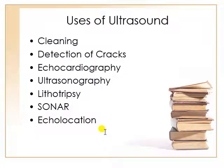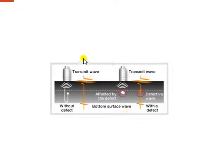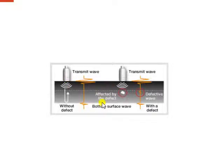The next application is detection of cracks. Sometimes in industries there are very minor cracks present in ducts or pipes which cannot be detected by the human eye. For that purpose we use ultrasound. A transmitter sends ultrasound through the duct. If there is no crack present in the duct, the same frequency and same energy sound will be received at the receiving side. But if there is a defect, crack, or blockage, there will be a disturbance in the sound.